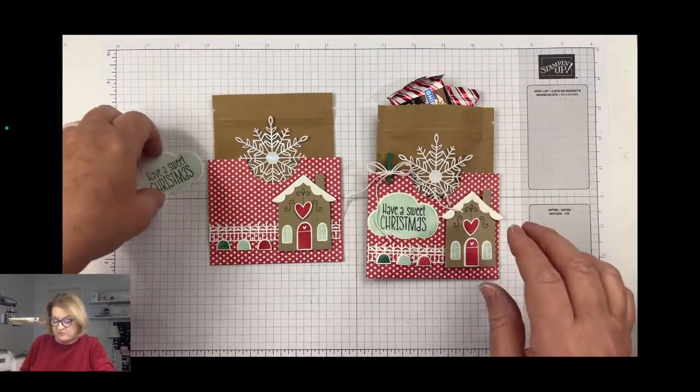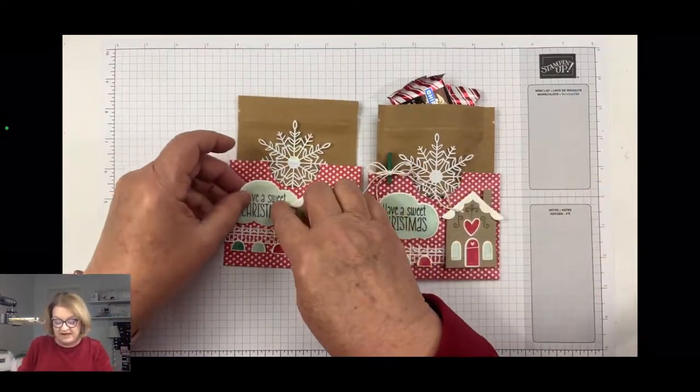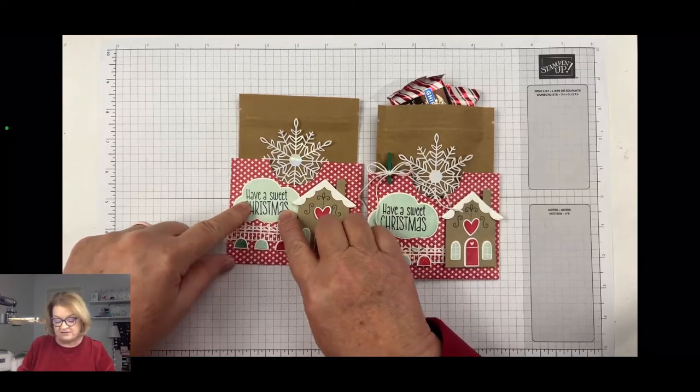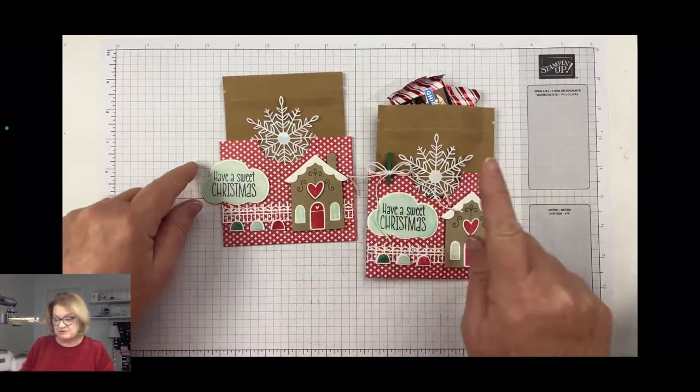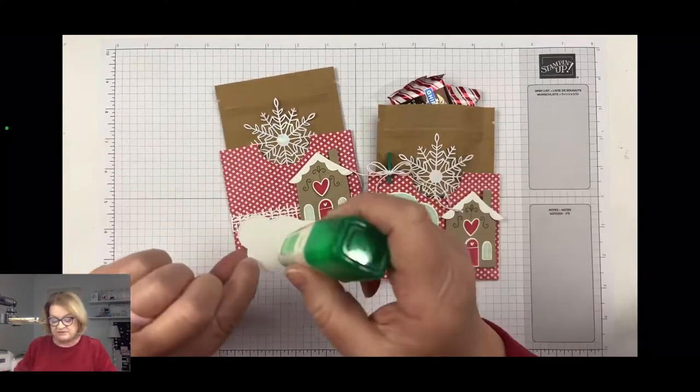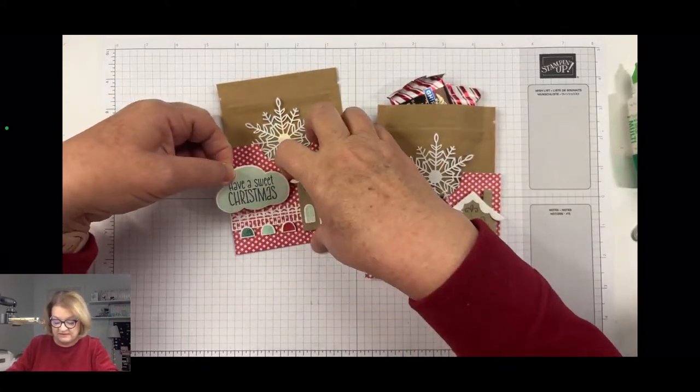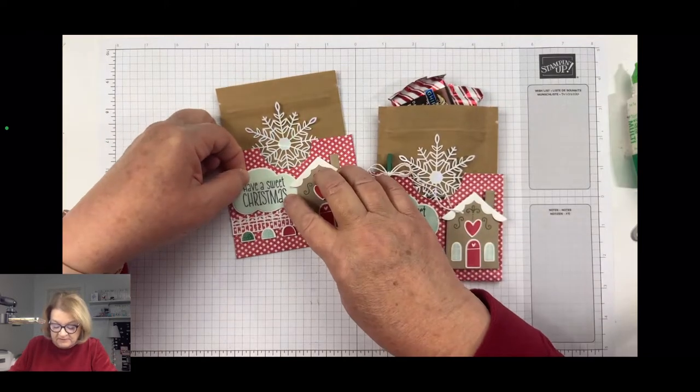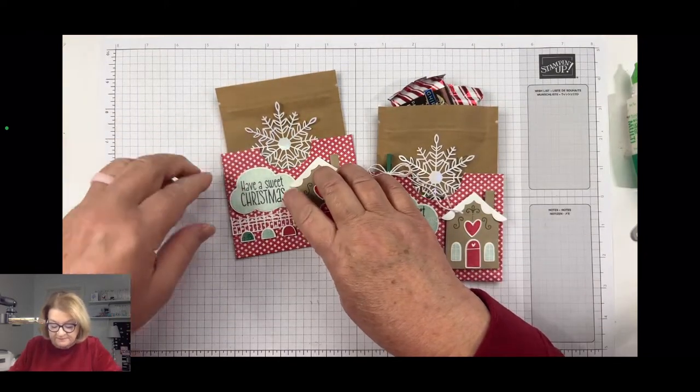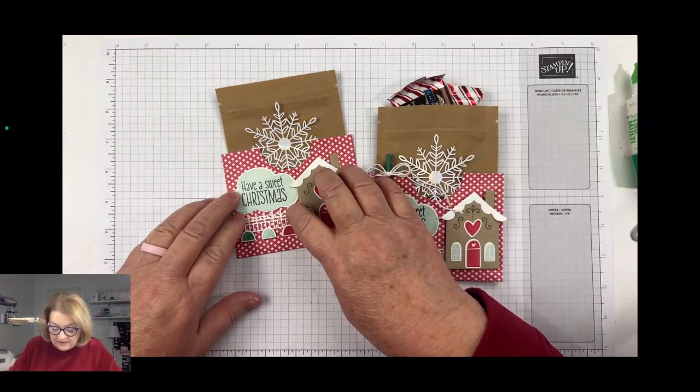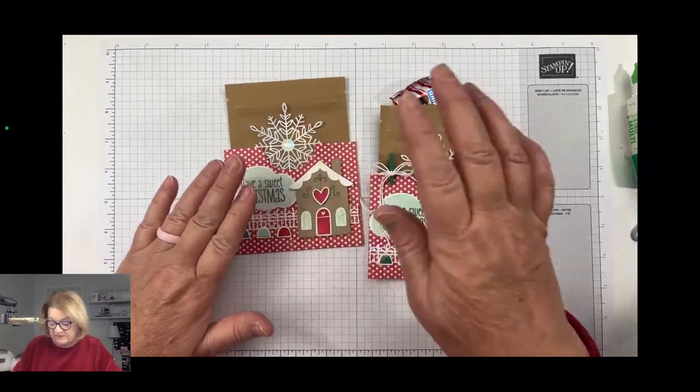Okay. Now for the sentiment, I just glued that flat on there because we're going to add our little bow and I didn't want it to be in the way of that. You might have to tuck it a little bit behind the house here. There we go.